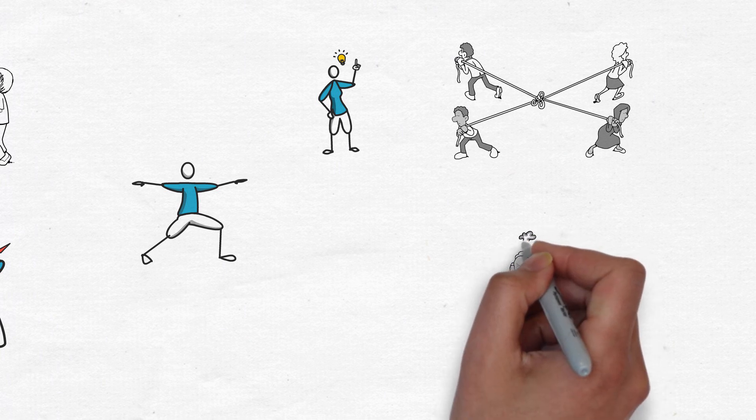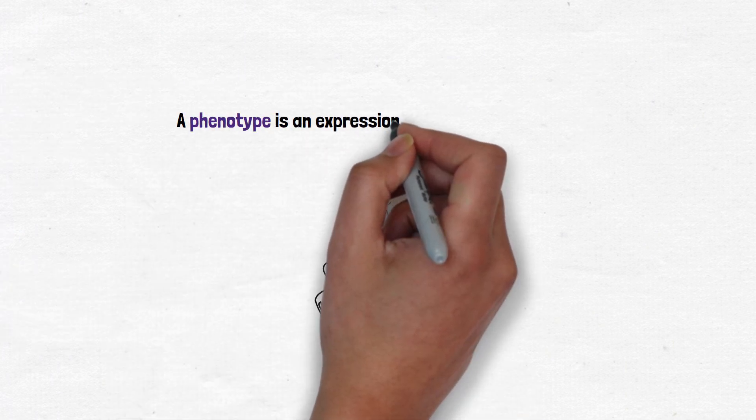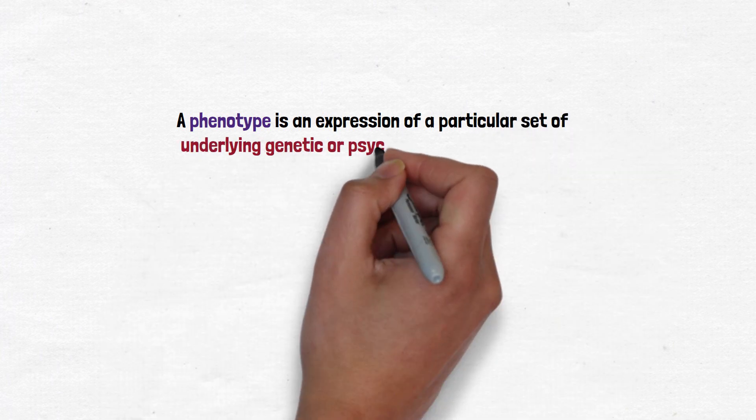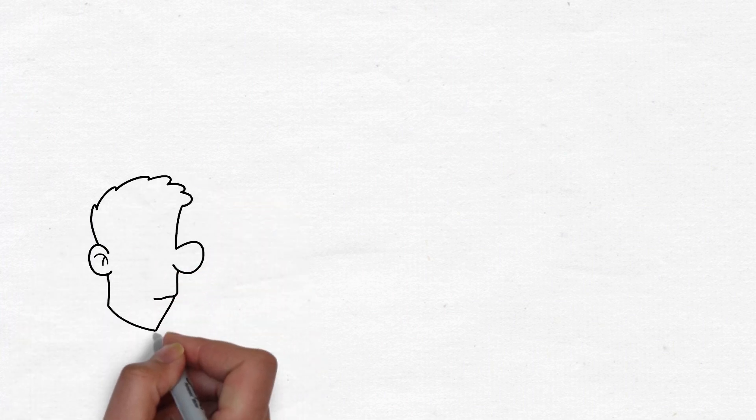So that's a common phenotype, as we call it. A phenotype, by the way, is just an expression of a particular set of underlying genetic or psychological components. So we say the phenotype, so a phenotype could be brown hair and green eyes like for me. A phenotype could also be that somebody uses the piling system.